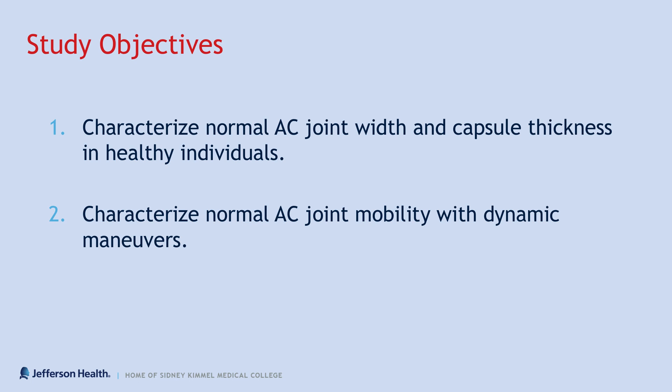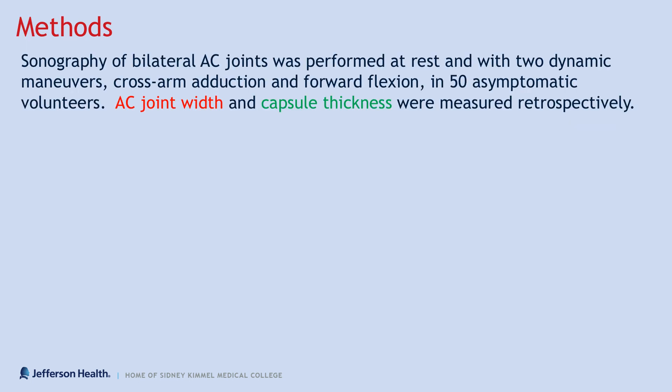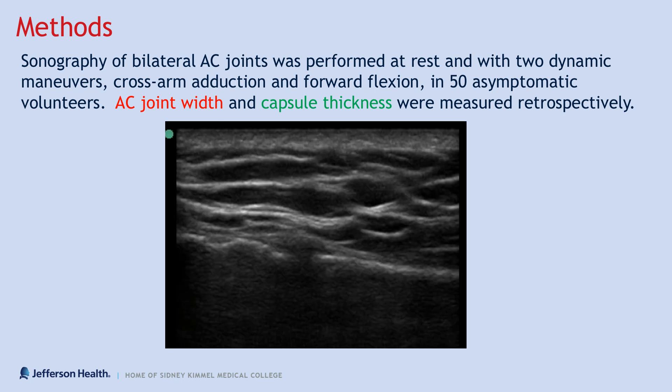Our methods involved sonography of bilateral AC joints performed both at rest and with two dynamic maneuvers in 50 asymptomatic volunteers. The two maneuvers were cross arm adduction and forward flexion. The image below shows how we measured the AC joint width and capsule thickness.